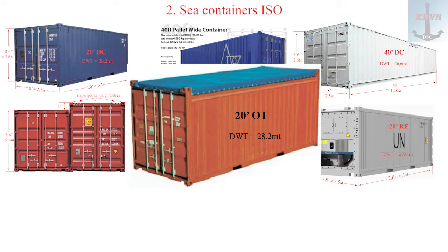Open top (OT) containers: designed for transportation of oversized and special cargoes that cannot be placed in containers in the usual way. The roof consists of removable and movable stiffening bars and an awning, which allows loading/unloading through the top. Available in both 20 and 40 foot. Sizes correspond to standard.